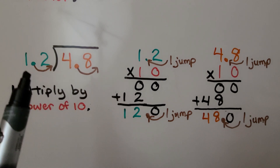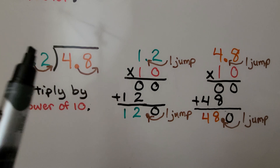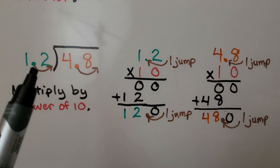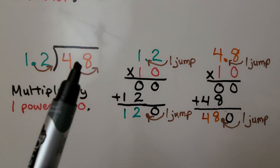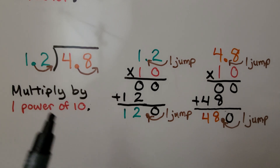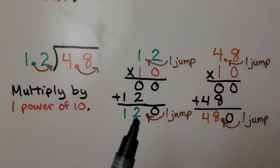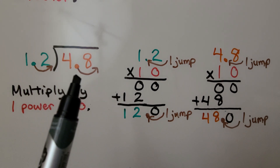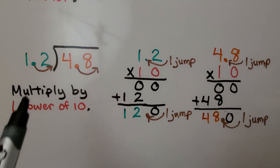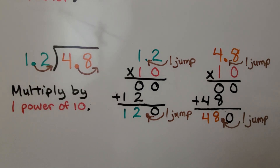So if we have 4 and 8 tenths divided by 1 and 2 tenths, we have a decimal point here that needs to be moved over because this needs to be turned into a whole number. We're going to move this one jump, multiplying by 1 power of 10. If we multiply 1 and 2 tenths times 10, we get the whole number 12. And if we multiply 4 and 8 tenths by 10, we get the whole number 48.